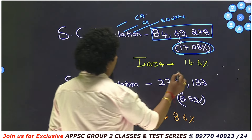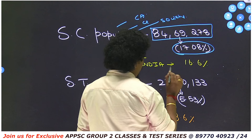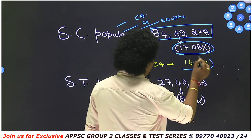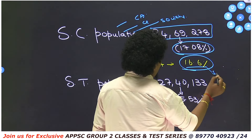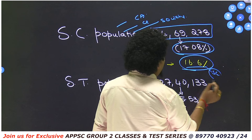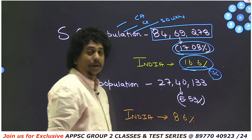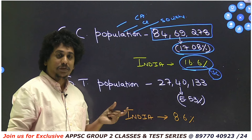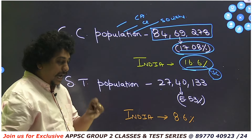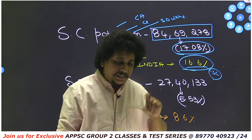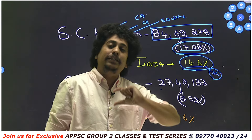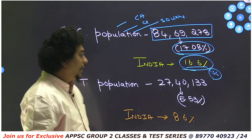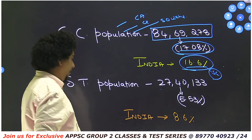Comparing with the India average: India has 16.6% SC population, whereas Andhra Pradesh has 17.08%. So the statement that 'in Andhra Pradesh, SC population in terms of percentage is higher than that of India' is absolutely correct.